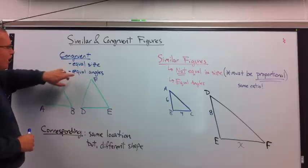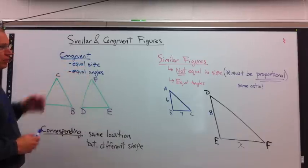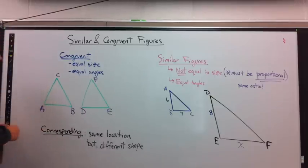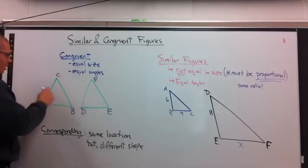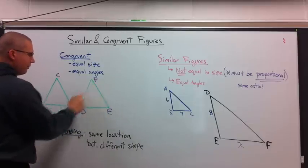Congruent shape means they are equal in size and they have equal angles, which means the measure of the angles would be the same. So, for instance, if I would tell you that these two are congruent, triangle ABC is congruent to triangle DEF.